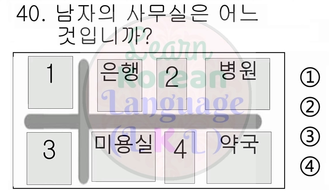29번. 의자가 어디에 있어요? 1번. 책상 위에 있어요. 2번. 책상 밑에 있어요. 3번. 책상 왼쪽에 있어요. 4번. 책상 오른쪽에 있어요. 다시 들으십시오. 4번. 책상 오른쪽에 있어요.